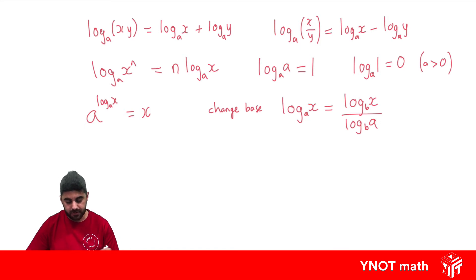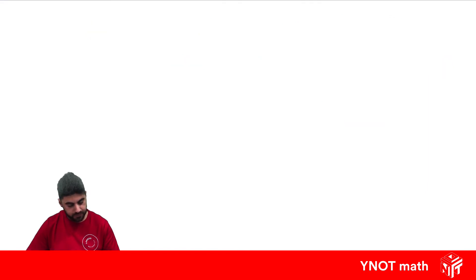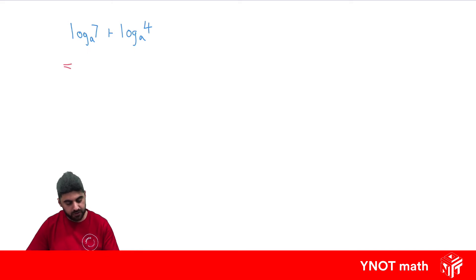Let's look at some examples using these log laws. We have log 7 base a plus log 4 base a — how can we simplify that? Well, using our first log law, that's going to be the log of the same base to the product of those numbers. So that's going to equal log 28 base a.